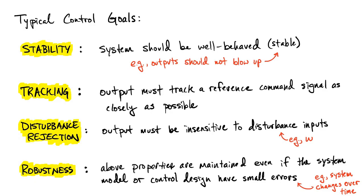Now before we start talking about specific control problems, the last thing at a high level is our conventional control goals. These can be binned into four different categories — four things we want to achieve with our control designs throughout the whole semester. The first is stability: a system should effectively be well-behaved. Physically, systems rarely go to infinity — that's more of a theoretical idea — but we will make the meaning of stability more precise as we move along.